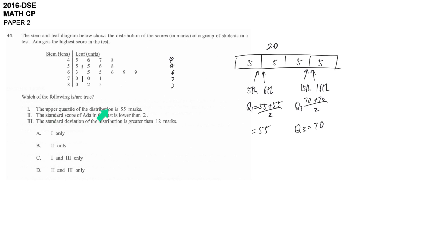They ask you about the upper quartile. The upper quartile should be 70 but not 55. So the first statement is wrong.